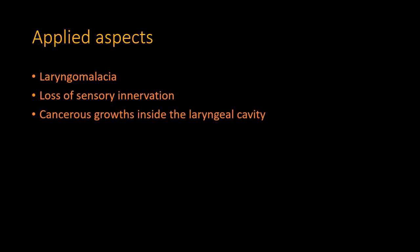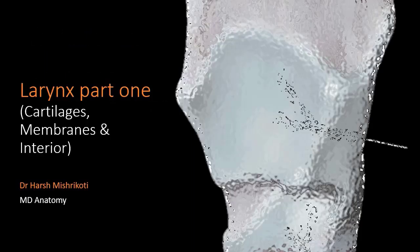Applied aspects: Laryngomalacia is a genetic condition where the larynx is not well formed, also known as membranous larynx. Loss of sensation on the inner surface of the laryngeal cavity can occur when the superior laryngeal nerve or recurrent laryngeal nerve is damaged during thyroid surgeries, seriously affecting the cough reflex. Cancerous growths are classified as supraglottic, glottic, or infraglottic according to the region — glottic cancers are diagnosed quickly because they affect the voice. This ends the session on cartilages, membranes, and interior of the larynx.